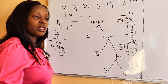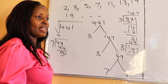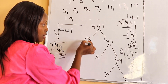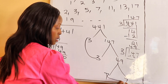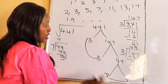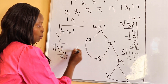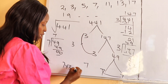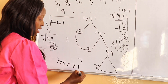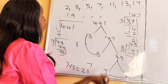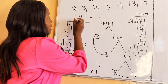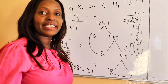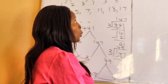Now we pair the factors. Pairing is done when the digits are the same. We pair the two threes and the two sevens, and from each pair we pick one digit. We pick three and seven — seven times three is 21. Hence, the square root of 441 is 21.